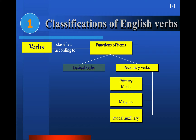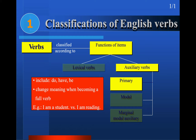We talked about auxiliary verbs. We said there are primary verbs, modal verbs, and marginal modal auxiliaries. Primary verbs are called primary because they sometimes function as the primary verb and sometimes as an auxiliary. For example, in 'I am a student,' 'am' is a main verb, while in 'I am reading,' it is an auxiliary.